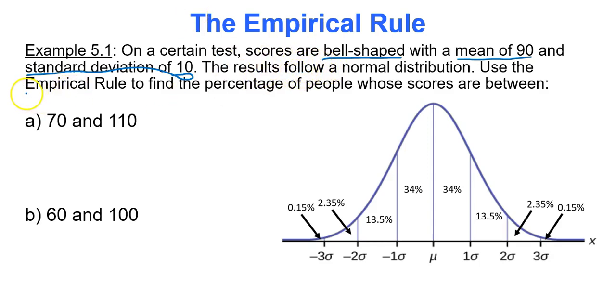Use the empirical rule, that means we're using that estimation rule, we're using this awesome picture which has regions with percentages in them, to find the percentage of people whose scores are between 70 and 110, 60 and 100. The first thing you have to do is take your empirical rule diagram and put it within context of the question.